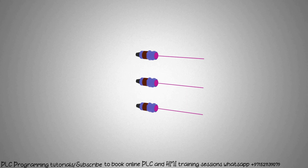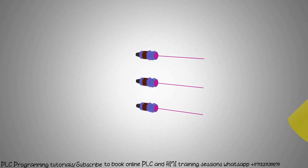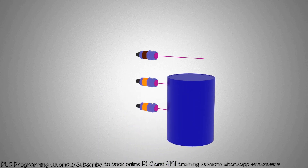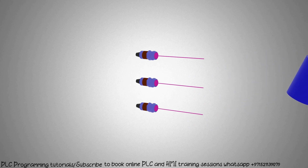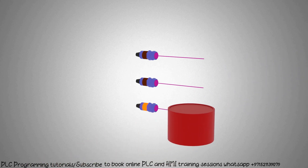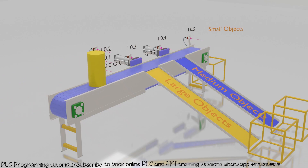When an object comes in front of the sensors and all three sensors are on, this means a large object is present. If only two sensors are on, this means a medium size object is present. In the third case, if only the bottom sensor turns on, this means a small object is present in front of these sensors.